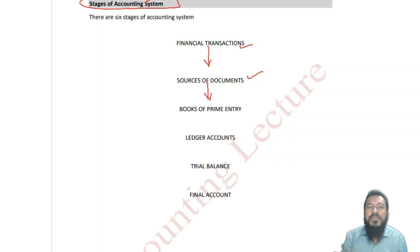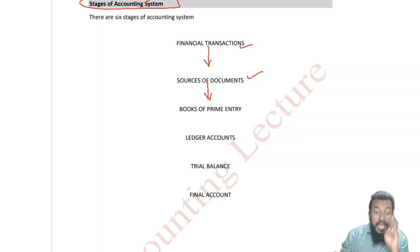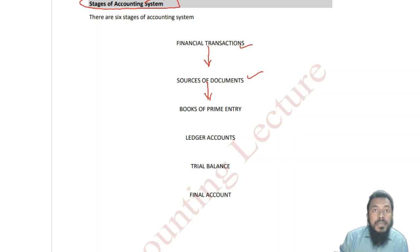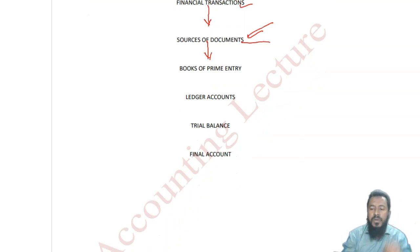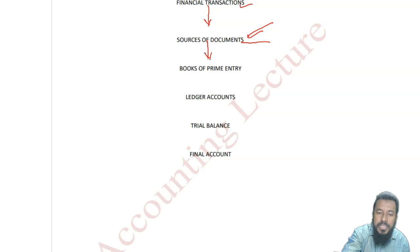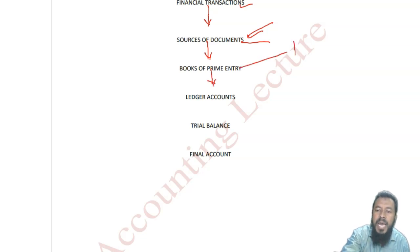If there is any sales return or purchase return, there should be some credit note. Then you start doing the books of accounts. The sources of documents — loads of invoices — those invoices you put into a day book, or we call it a prime entry day book.